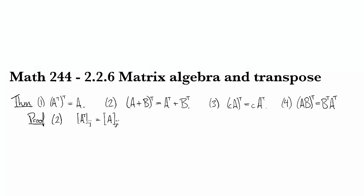Okay so let's look at A transpose plus B transpose. If I consider the ijth entry of this then by the definition of matrix addition this is the ijth entry of that one plus the ijth entry of the other one.